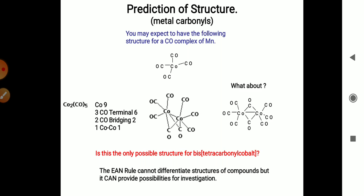The EAN rule cannot differentiate the structure of compounds, but it can provide the possibilities for investigation of the structure of the compound.